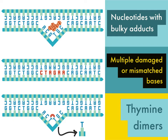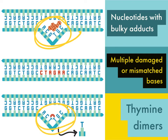An important feature to note is that both bulky adducts and thymine dimers distort the structure of the DNA molecule. This is important because there are two pathways of nucleotide excision repair that differ only in how DNA damage is recognized. Specifically, one pathway is initiated by proteins that recognize distortions of the DNA double helix. All subsequent repair steps in both pathways are the same.